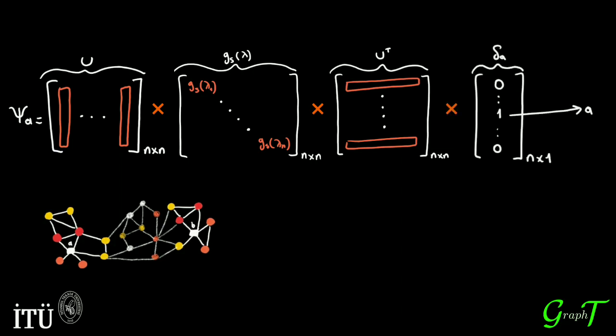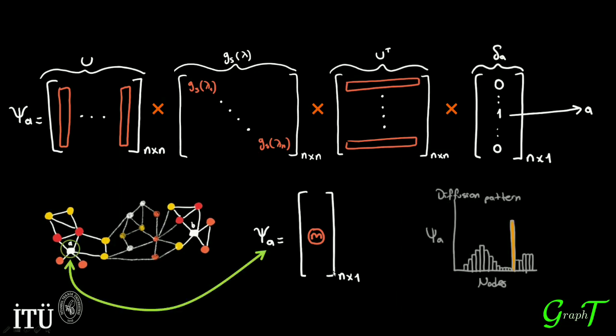The mth element of this vector represents the diffusion from node M to node A. For example, here in this bar chart, each bar represents the one node that is connected to A, thus an element in the psi vector. You can imagine that M corresponds to this bar.